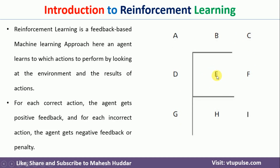When the agent is present in state E, he can take only one action — a right movement. He cannot go up, he cannot go left, he cannot go down. So he has to perform this action, and because it is a correct action, he will be given a positive reward. When he comes to the next state, he will look into the environment and perform one of the available actions — either up or down. Whenever he performs up, he is moving towards G, so it is a correct action and he will be given a positive reward. But when he performs the action from F to I, that is an incorrect action, and he will be given a negative feedback. Whenever a negative feedback is given, he will understand that he should not follow such a path in future.